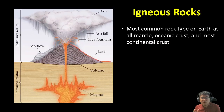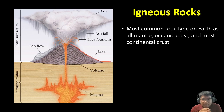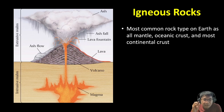Igneous rocks are the most common rock type on earth. All the mantle, the oceanic crust, and most of the continental crust are all made of igneous rocks.